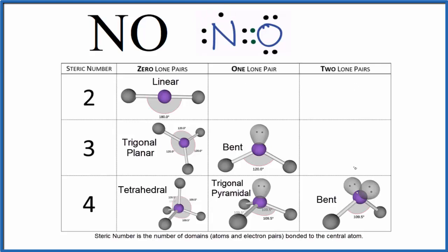If we try to use this chart here to figure out the molecular geometry, the problem is there's only two atoms here in NO, and our chart has three or more. So this really won't help us. Let's try to visualize the molecular geometry of NO.